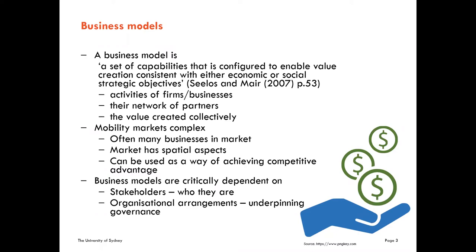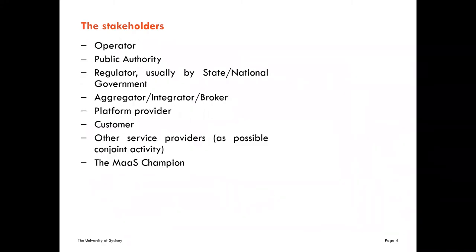Although we're not concerned with organisational structures per se, the discussion paper makes clear that the governance arrangements in place are intrinsically connected to the business model and hence have to form part of the framework. This slide shows that a mobility framework includes rather a large number of stakeholders. You can see from the list here, from operator down to the MAS champion, and there are two points really worth making at this point.